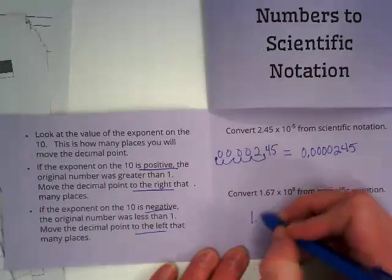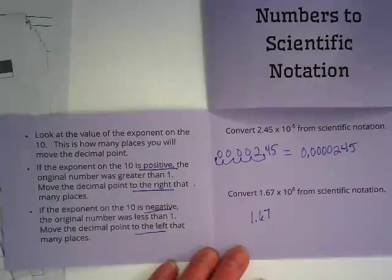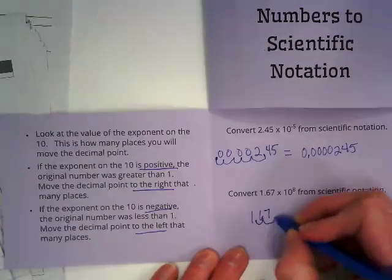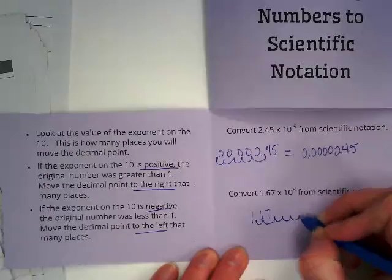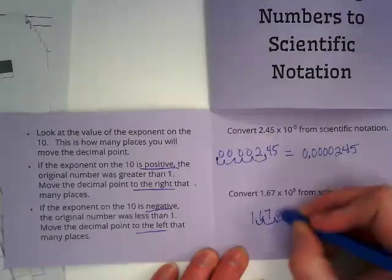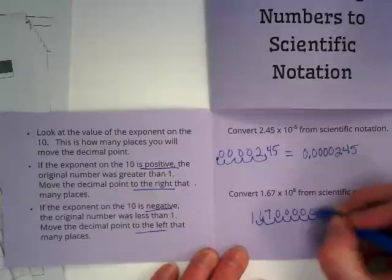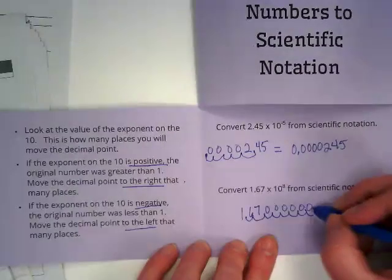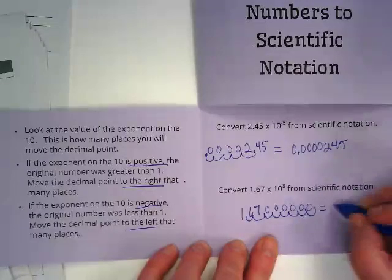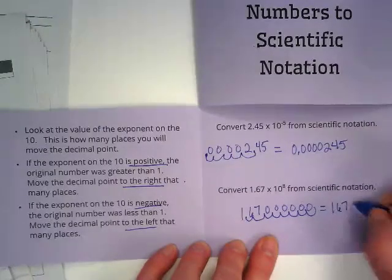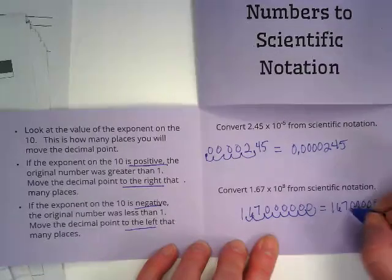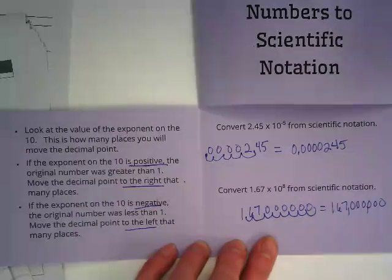Let's rewrite 1.67. And we're going to make eight bumps over. One, two, three, four, five, six, seven, eight. And that's our number.